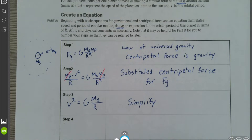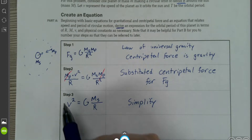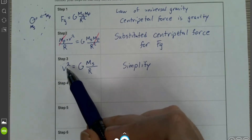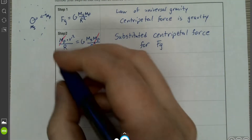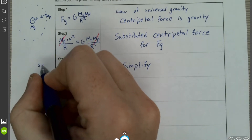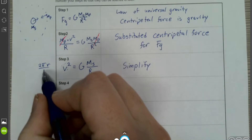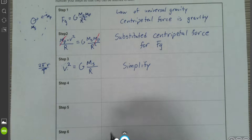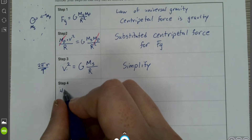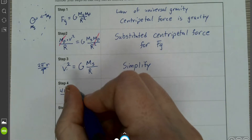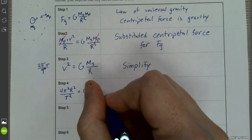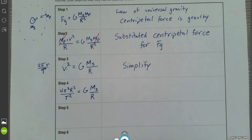We need to relate the orbital period, since the problem asks for T in terms of R, M, V, and physical constants. Because the object moves around the circle at constant speed, the velocity equals the circumference divided by the period: v = 2πR/T. Squaring that gives v² = 4π²R²/T², and that equals G·M_s / R.